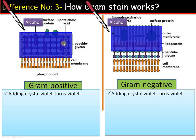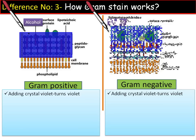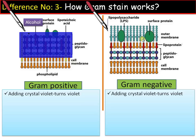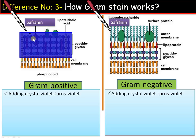Upon alcohol treatment, in the case of gram-positive bacteria it remains violet as the stain is tightly bound to the peptidoglycan wall and alcohol cannot dissolve the peptidoglycan wall. Whereas in the case of gram-negative bacteria on addition of alcohol, much of the stain is bound to the lipopolysaccharide layer — on addition of alcohol this layer dissolves, therefore gram-negative bacteria loses the color of crystal violet and becomes colorless. So in order to visualize the gram-negative bacteria a counter stain is needed.